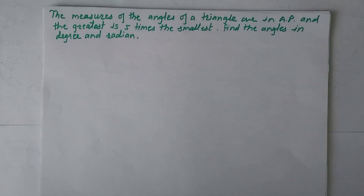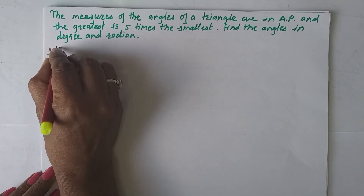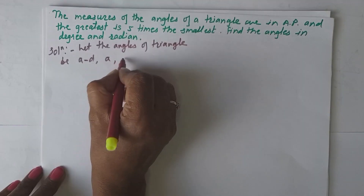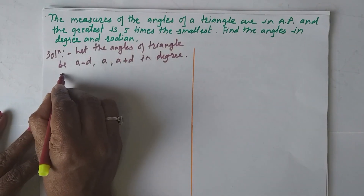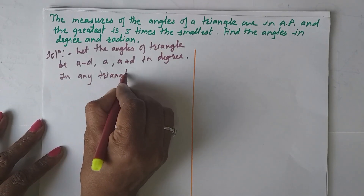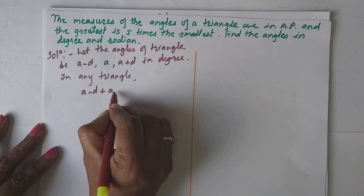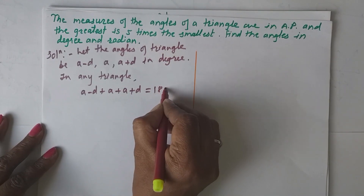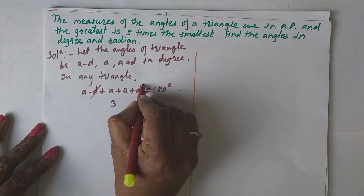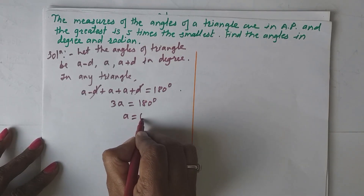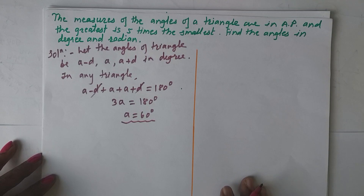The angles of the triangle are in AP and there are three angles, so let the angles be a−d, a, a+d in degrees. We know that the sum of all three angles of a triangle is 180°. Therefore (a−d) + a + (a+d) = 180°, which gives 3a = 180°, so a = 60°.